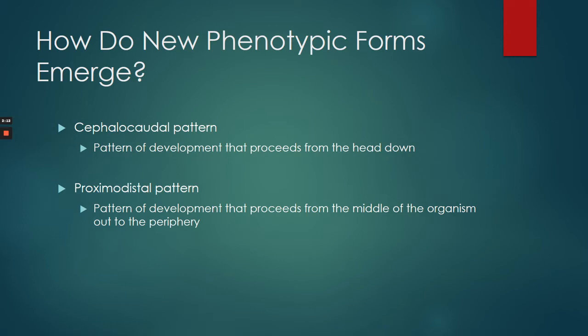The middle of your body is the spinal cord, and so that develops first, then the internal organs, and then the limbs — middle outward for proximal-distal. Those are two things to remember for embryonic development.